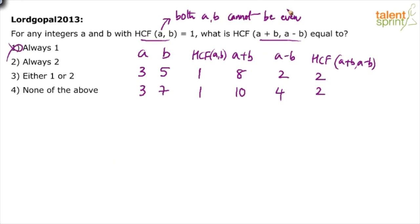Both a and b cannot be even numbers, because if you take any two even numbers — like 26 and 38 — the minimum HCF is 2. Since 2 is a factor of all even numbers, the HCF will always be at least 2. So we cannot have two even numbers when HCF of a and b is 1.